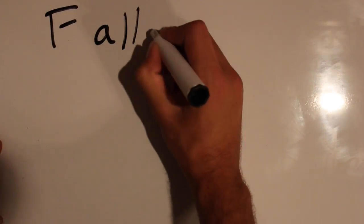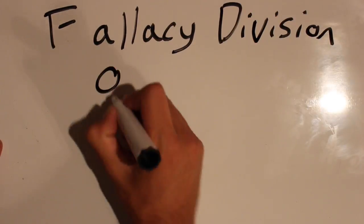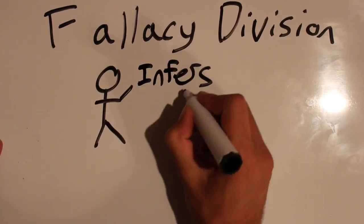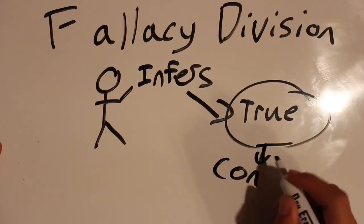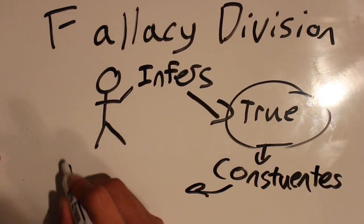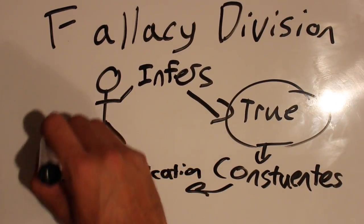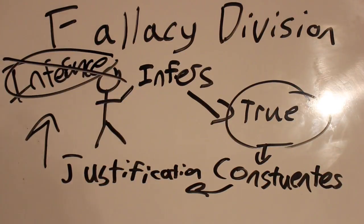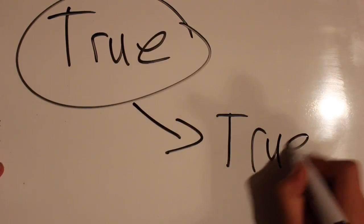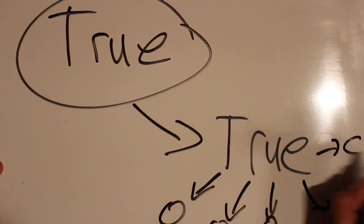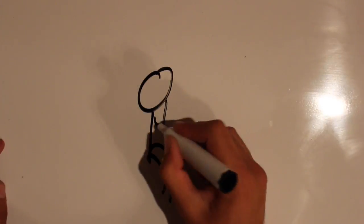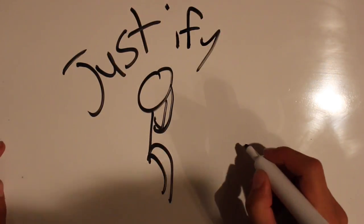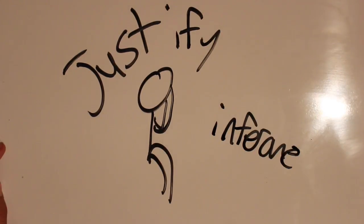A fallacy of division is committed when a person infers that what is true of a whole must also be true of its parts, and justification for that inference is not provided. In other words, what is true of a whole must also be true of its parts. A person who fails to justify that inference with the required degree of evidence commits this fallacy.